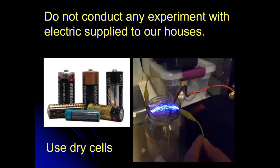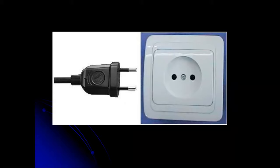Next, do not conduct any experiments with electricity supplied to our houses. Only use dry cells for experiments because the electricity that is flowing from our houses, it has a very big amount of power that can cause death. We get the electricity through the power points in our houses. And when we use the electric plugs, we can get that electricity and use it in our appliances.